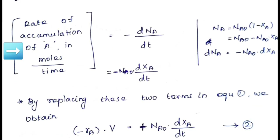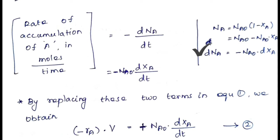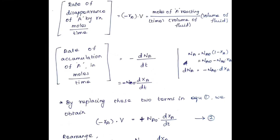The second term, accumulation, is the rate of accumulation of A in moles per time = −dNA/dt, the number of moles of A disappearing with respect to time. We express NA in terms of conversion: NA = NA0·(1 − XA). Differentiating: dNA = −NA0·dXA. Substituting, accumulation = −NA0·dXA/dt.